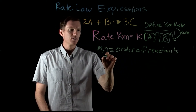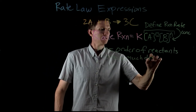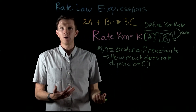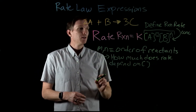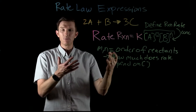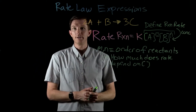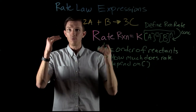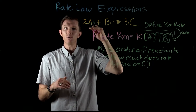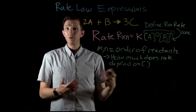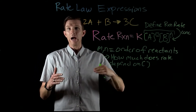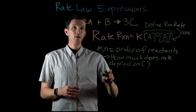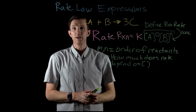The order tells us how much the rate depends on the concentration of that specific reactant. If the order of reactant A is zero, there will be no effect on the rate from changes in concentration of A. If it's first order (M equals one), there's a one-to-one relationship — doubling concentration doubles the rate. If M is two, it's a squared relationship — doubling concentration makes the rate four times faster. So there's a clear distinction in what order tells us about rate dependence on concentration.